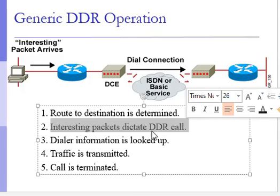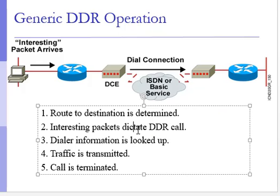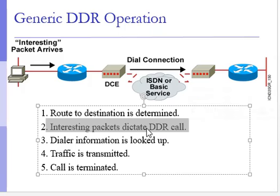The second step is that packets dictate the DDR call, meaning packets indicate this is a DDR call with DDR enabled. Note that DDR is a subset of ODR — On Demand Routing — while DDR stands for Dial on Demand Routing. The first thing you must do is configure and enable DDR on your router, switch, and ISDN setup.